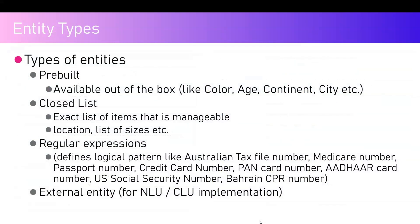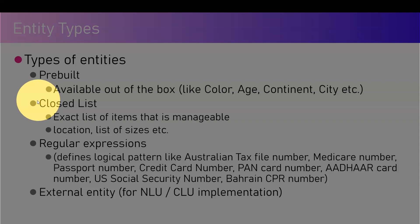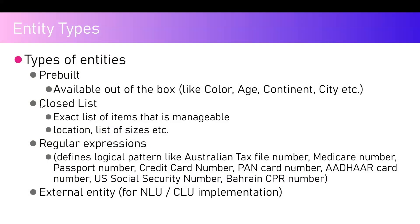There are four different types of entities within Copilot Studio. First is pre-built — available out of the box, like color, age, continent, city. Second is a closed list entity — if you're not happy with pre-built entities and your requirement expects something different, you can create a closed list, which is a finite list of manageable items. For example, t-shirt sizes like SS for short, MM for medium, L for large, XXL, 3XL, and 4XL.